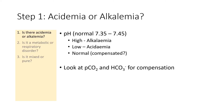Step one: is there acidemia or alkalemia? If the pH is available, we should take a look at that. Normal pH is between 7.35 to 7.45. If pH is high, that suggests alkalemia. If it is low, it is acidemia. And if the pH is normal, there may be a compensated acid-base disorder. We have to look at the pCO2 and the bicarbonate for compensation.